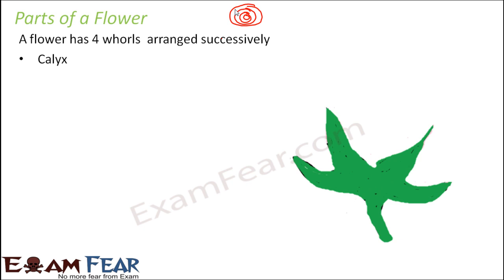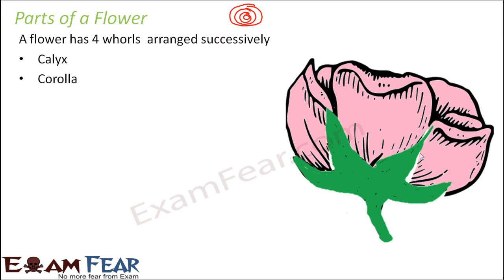Let us first talk about Calyx. Calyx is nothing but the sepals. The sepals are each of these leaf-like structures, and the entire whorl of sepals is given the name Calyx. So Calyx is the outermost whorl. The next whorl is Corolla — that is the petals. Corolla is the name given to the whorl of petals.